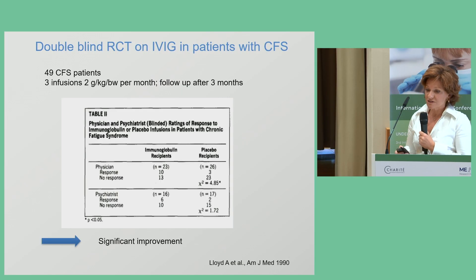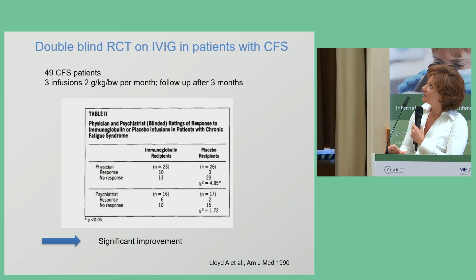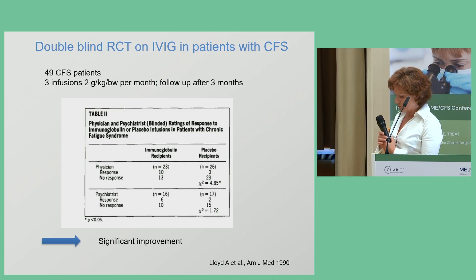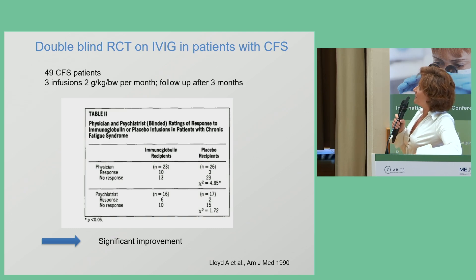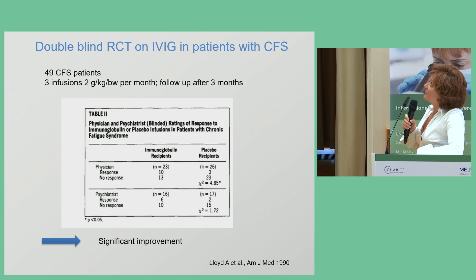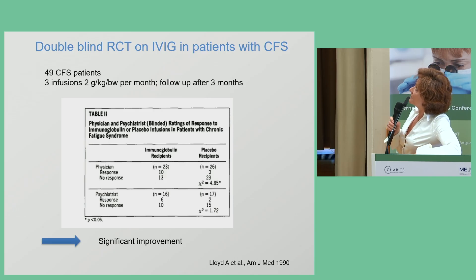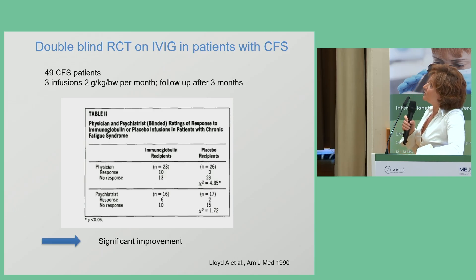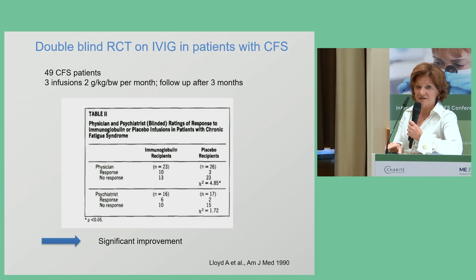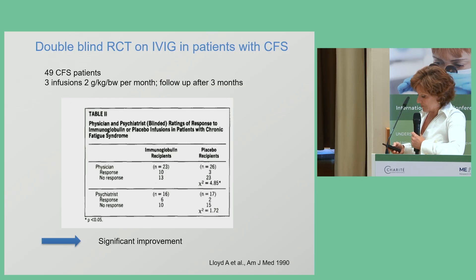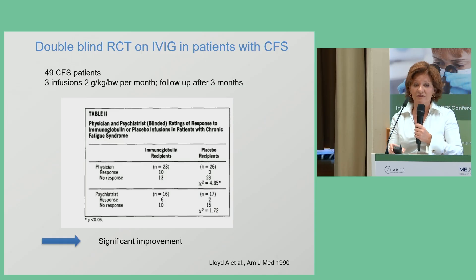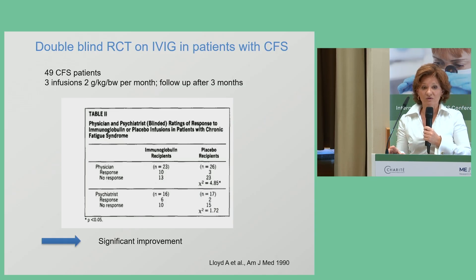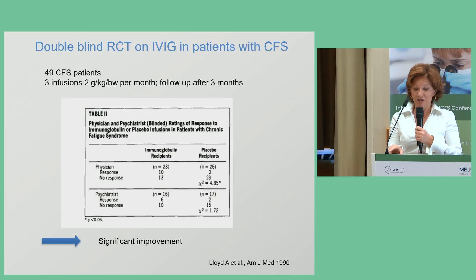The first study describing the use of IVIG in patients with ME-CFS is from 1990. It analyzed 49 patients who received three infusions of two grams per kilogram body weight, followed by physical and psychiatric follow-up analysis. All of these patients showed significant improvement.